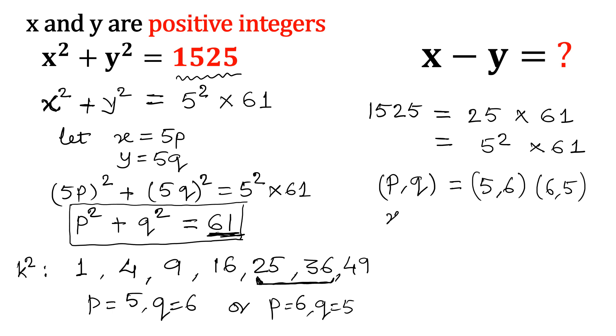So x, y would be the ordered pair, that is 5p and 5q. So either 25, 30 or 30, 25.